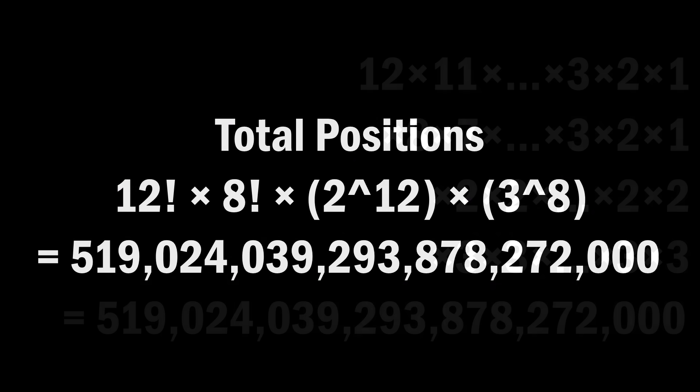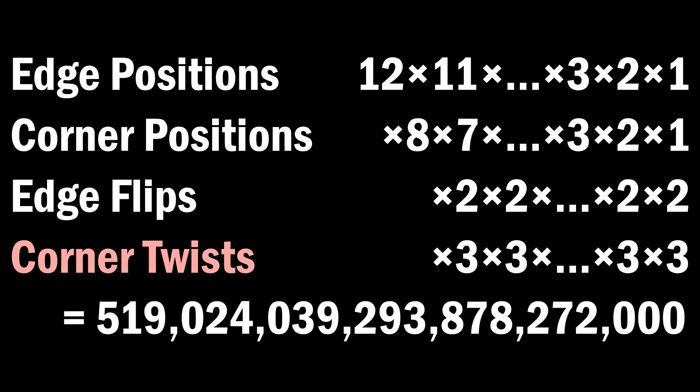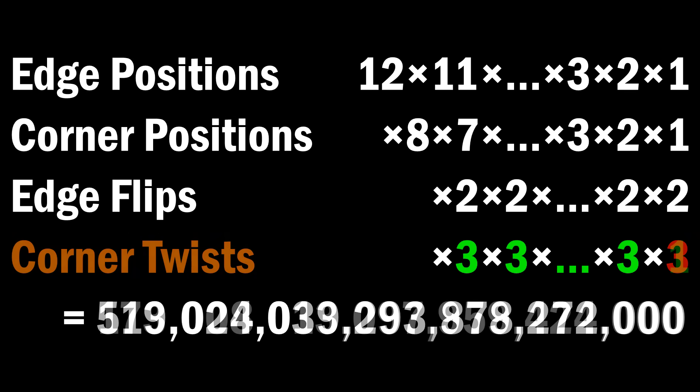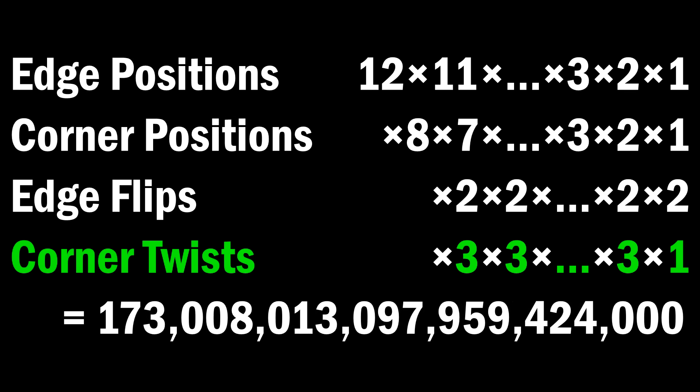So going back to the numbers, let's change this to reflect what I just talked about. In terms of how I put the corners in, like how they're twisted, I can put the first seven corners in however I like. But the last one depends on how the first seven are twisted. So remember, the numbers here are just for assembling the cube any way I want. But if I want to assemble the cube to be solvable, then the last three doesn't belong there, and it should be a one. Because for the last corner, I only have one option of how I put it in. If I put it in wrong, then the cube is not solvable.